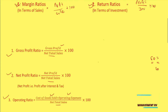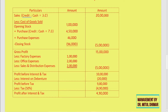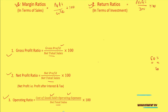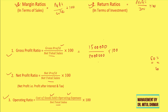Let us now go through a practical example using the income statement of Sneha Limited. Sales given here is 20 lakh rupees and gross profit is 15 lakh rupees. So the gross profit ratio is 15 lakh divided by 20 lakh into 100, giving a gross profit ratio of 75%.